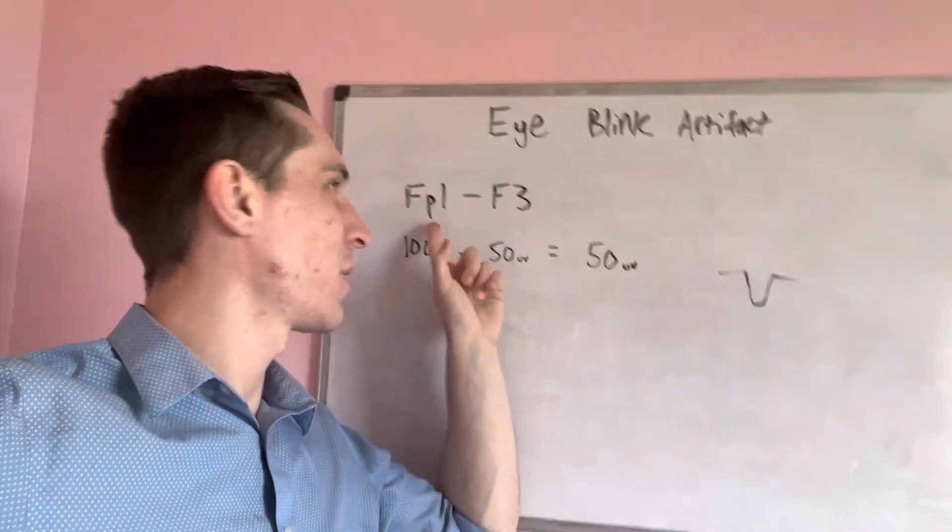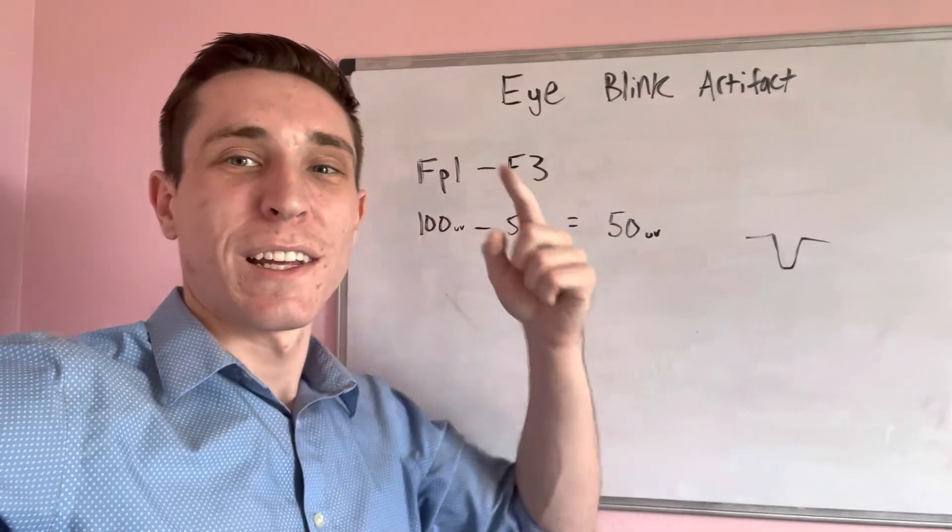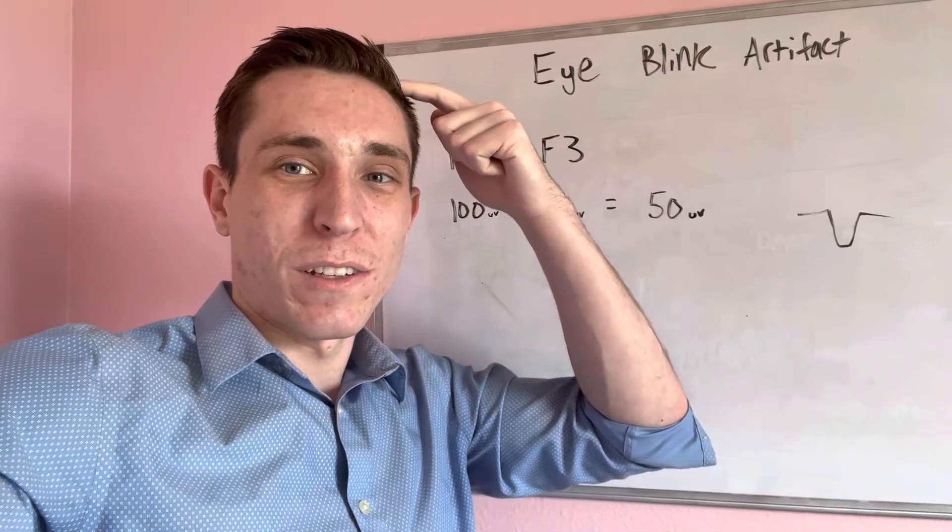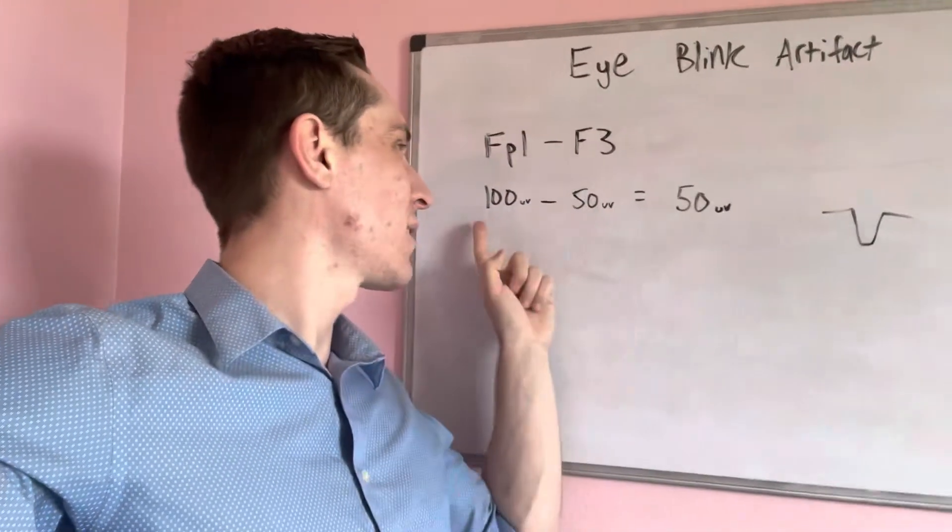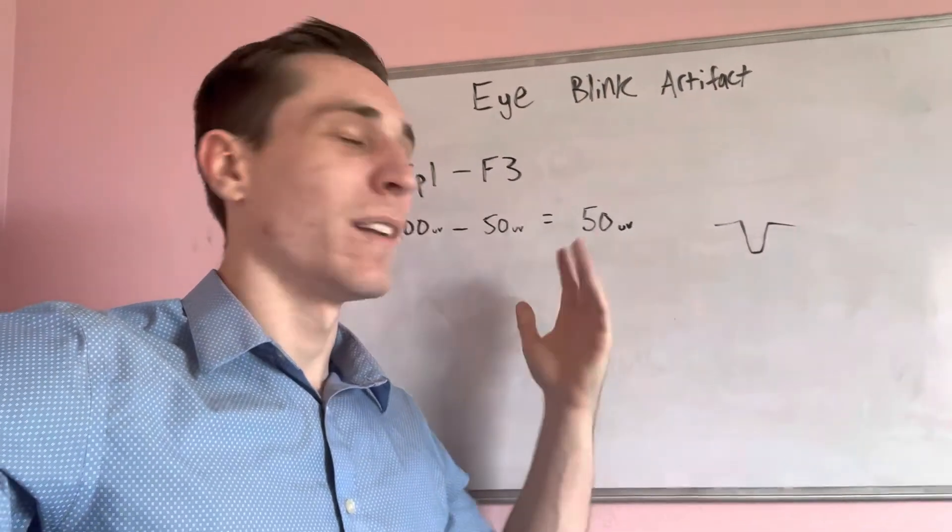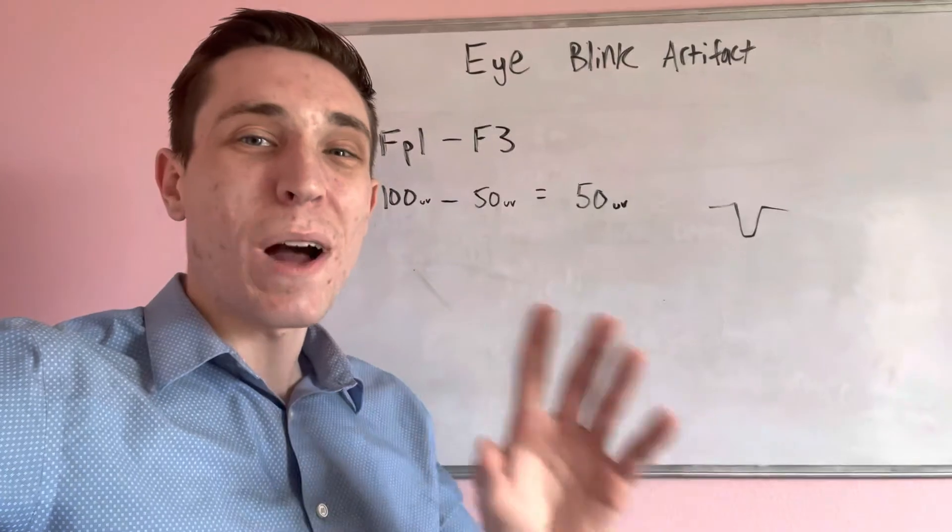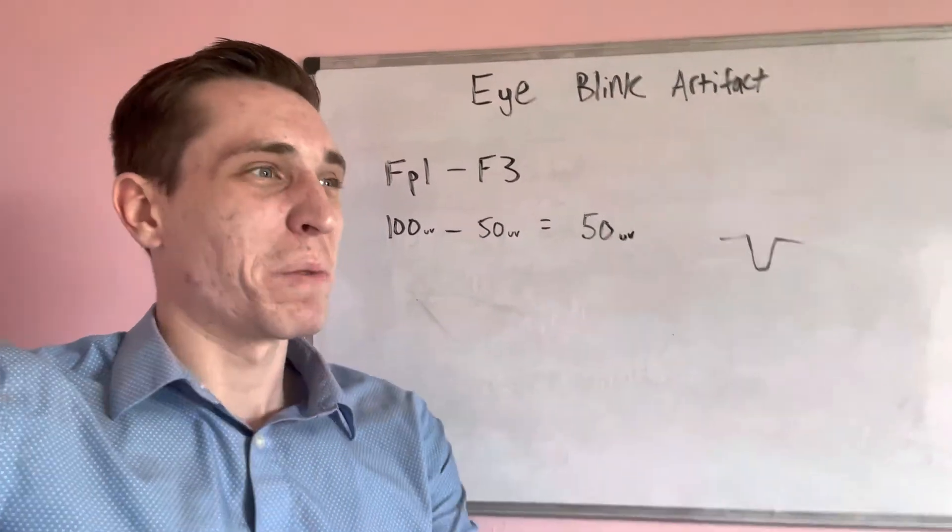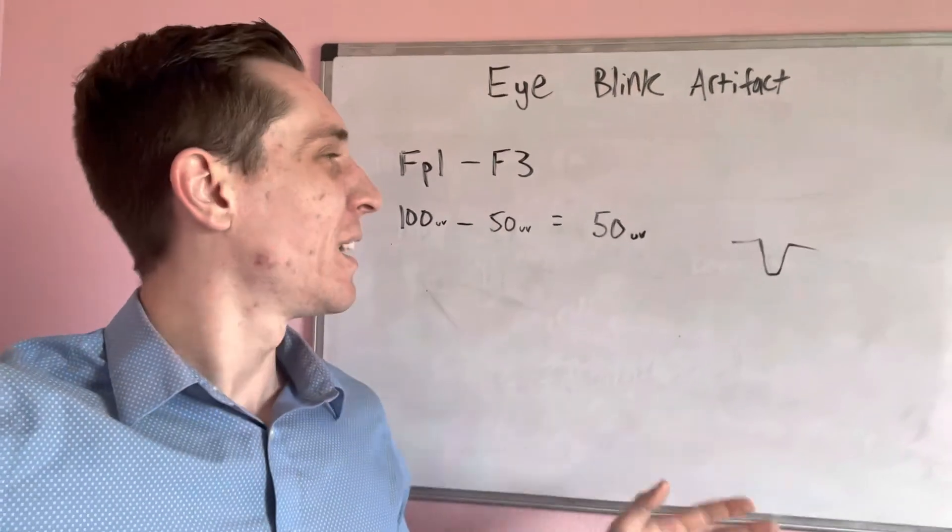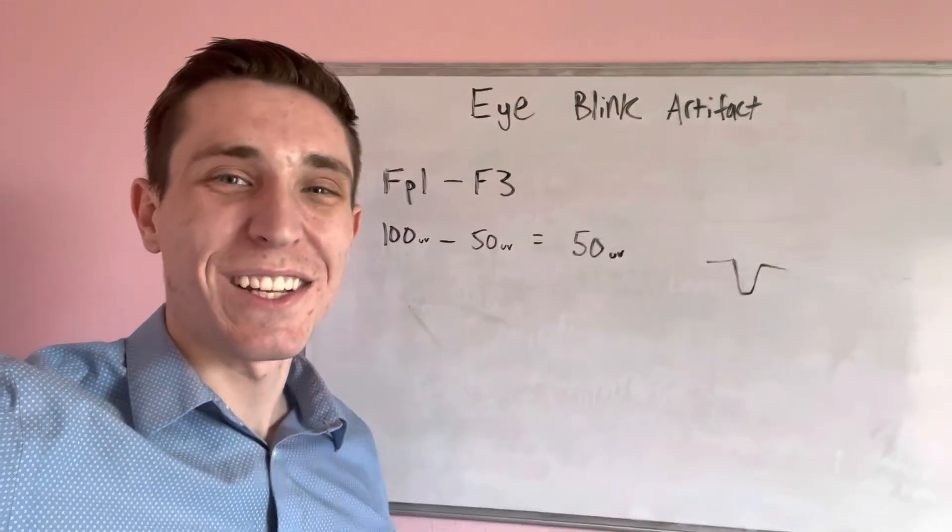This is honestly more like a school thing so you can know the reason behind the shape of the EEG waveforms in general. Why is this a downward deflection? Well, you're comparing FP1 to F3. FP1 picks up the most activity from an eye blink. F3 is a little farther away so it'll pick up a little less. 100 minus 50 is 50. And positive numbers go down, negative numbers go up. I don't know why they made it this way. Maybe I should know, but it's a pretty interesting thing.